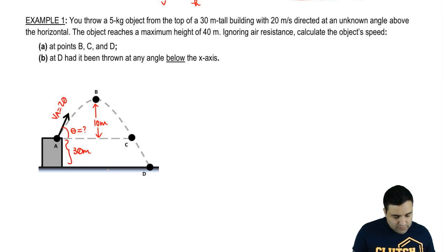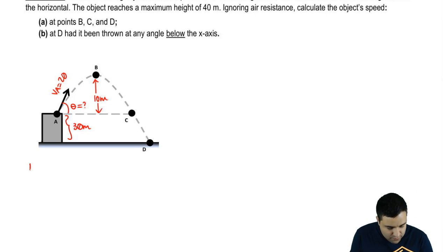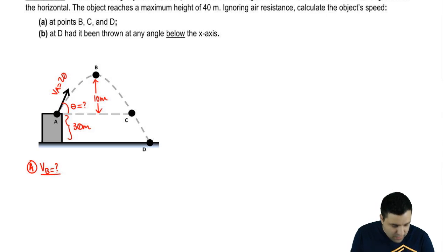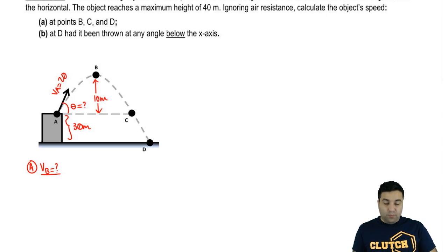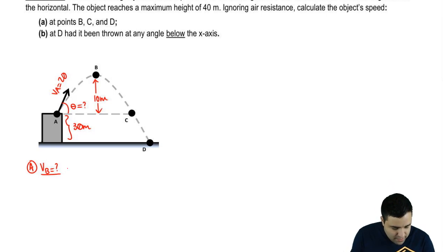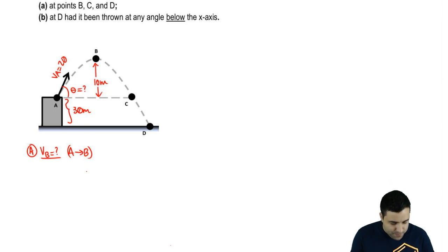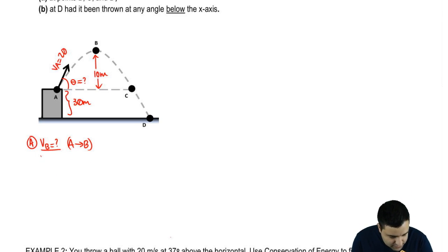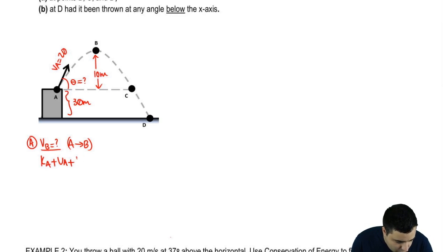Let's start by finding the velocity at point B. I know information about point A: the initial height and initial velocity. I want information about point B, so I'll write an energy equation from A to B: K_A + U_A + W_nonconservative = K_B + U_B.